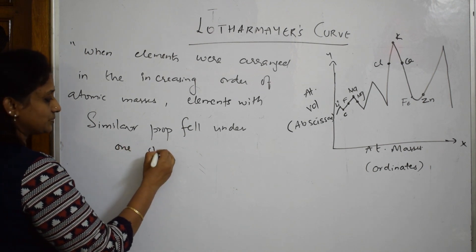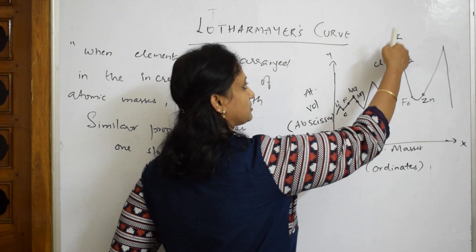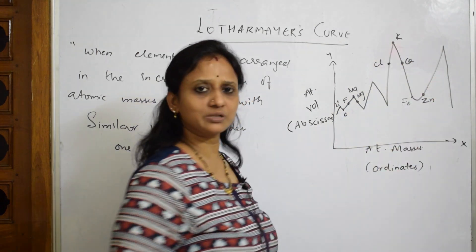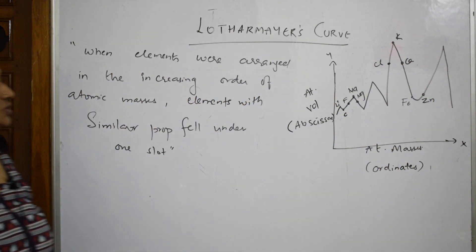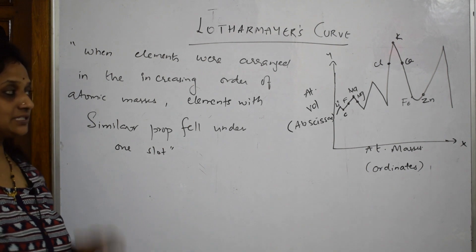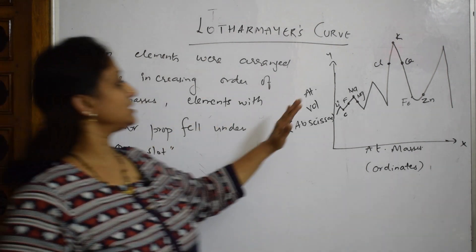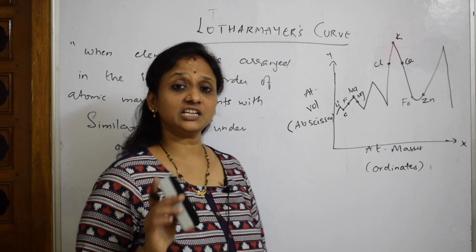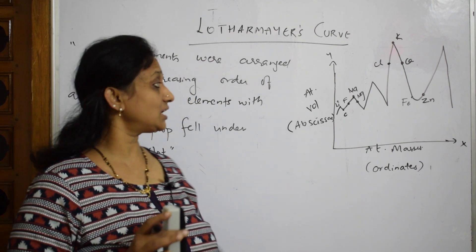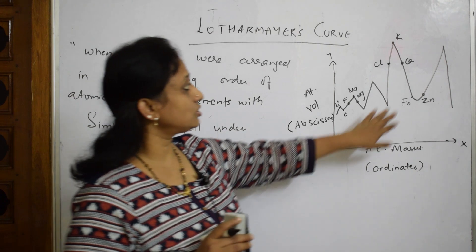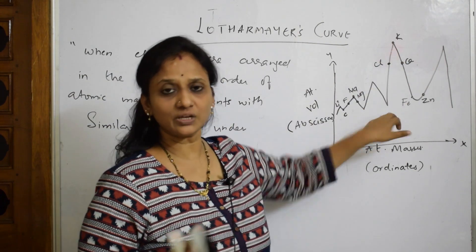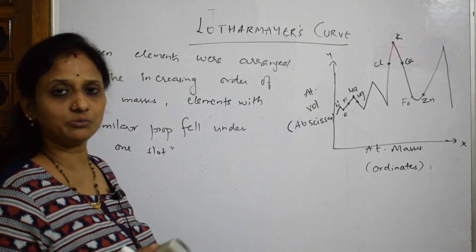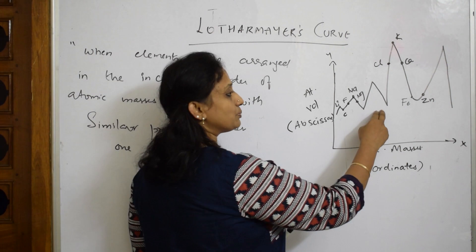One slot means here, if this similar properties, this is similar properties, this is similar properties like that. What Lothar observed is, when he considered two quantities, atomic volume and atomic masses, he has observed the arrangement of elements, based on that, he has seen both the peaks as well as troughs. Means, if I have to speak in the form of a wave, he has observed two important things.